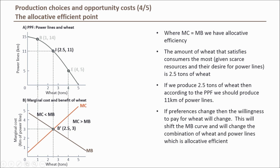Lastly, if preferences change or relative costs change, then the marginal benefit and marginal cost curves will shift, resulting in a different allocative efficient point or allocation. Using the same method we just described, the economy will try to maximize its overall benefit by moving productive resources to produce the goods which bring it the highest level of overall benefit — or where marginal cost again equals marginal benefit.